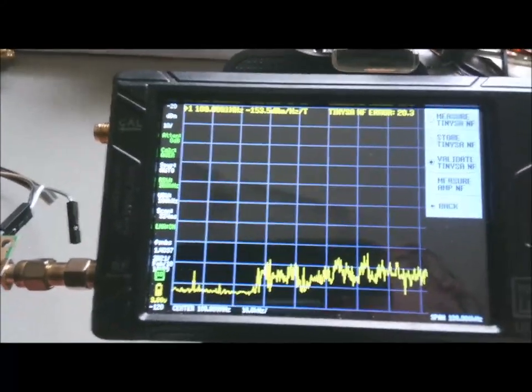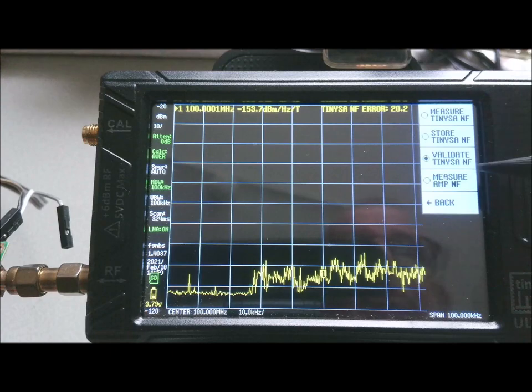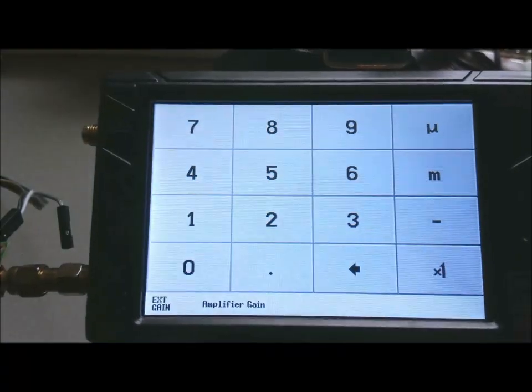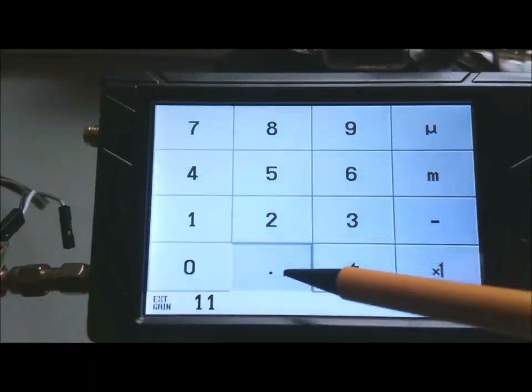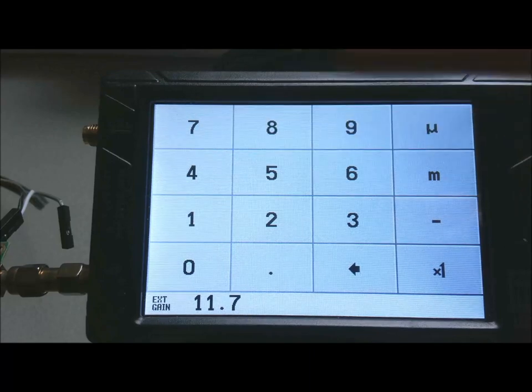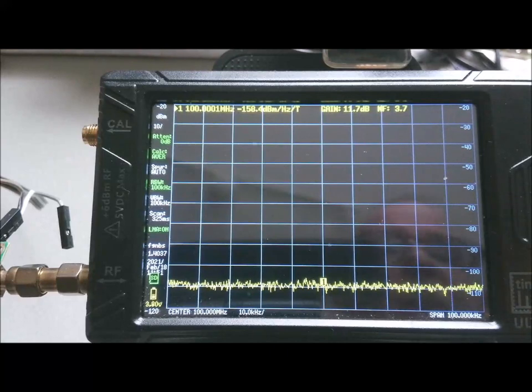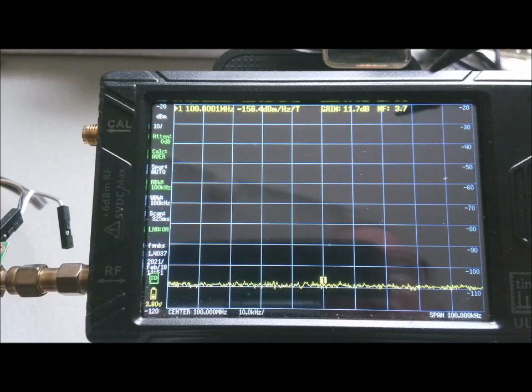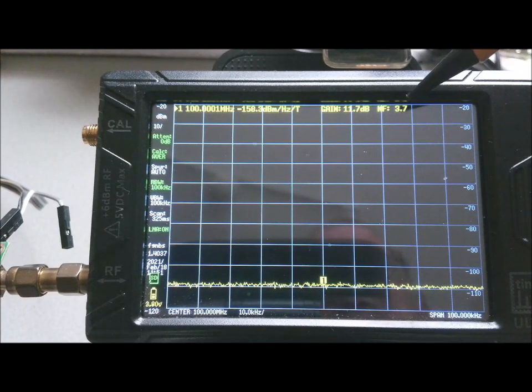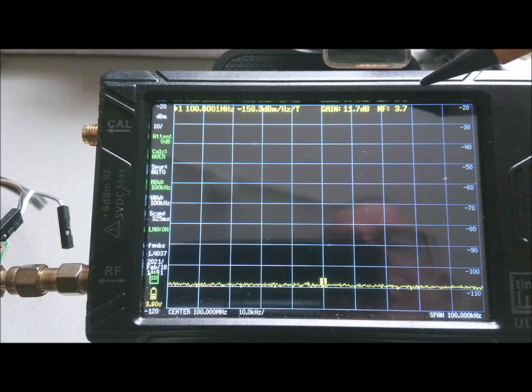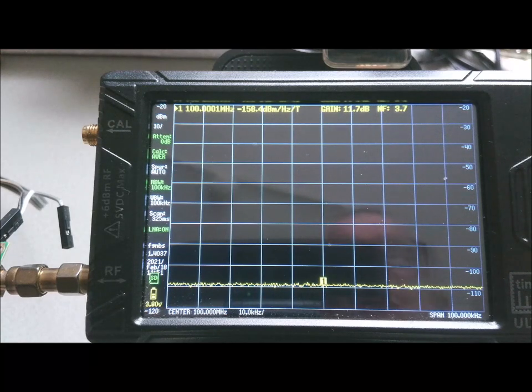So we go back to the TinySA and we activate the next step, measure amplifier noise figure. Now you have to enter the gain of the amplifier. I've measured that previously, 11.7 dB. And the measurement is now done at the frequency that was previously specified, 100 MHz. And here you see the noise figure of the amplifier being measured. The gain as specified was 11.7 dB, and the noise figure measured by the TinySA is calculated to 3.7 dB.